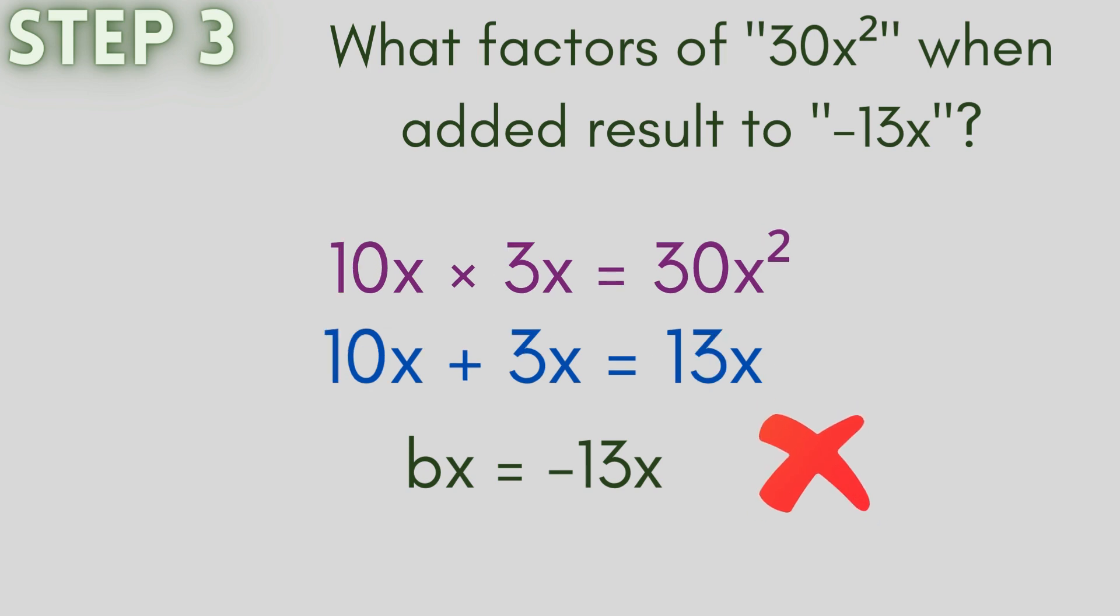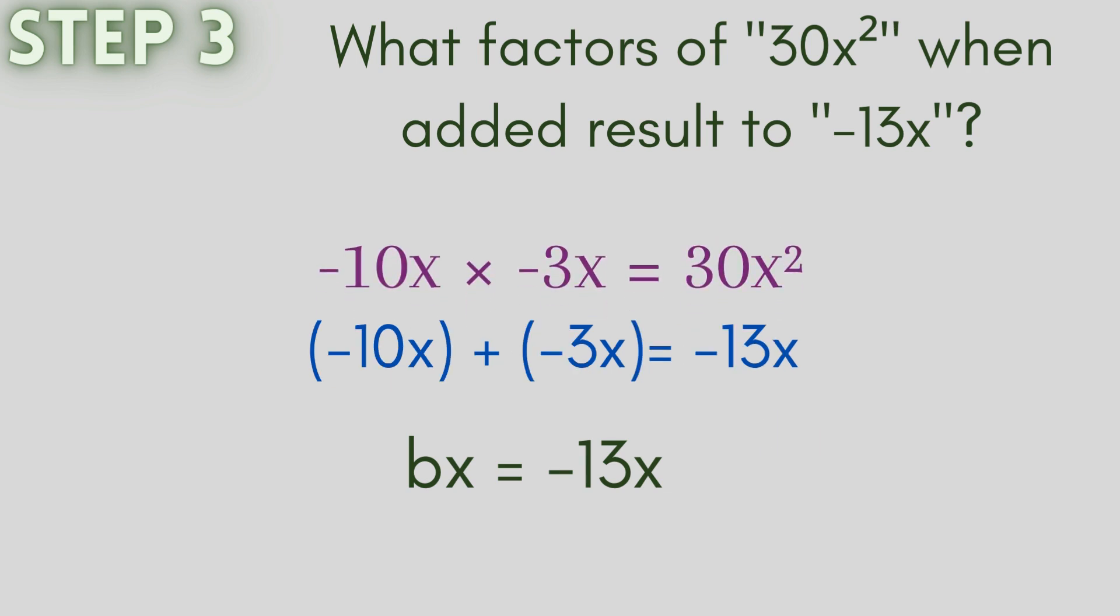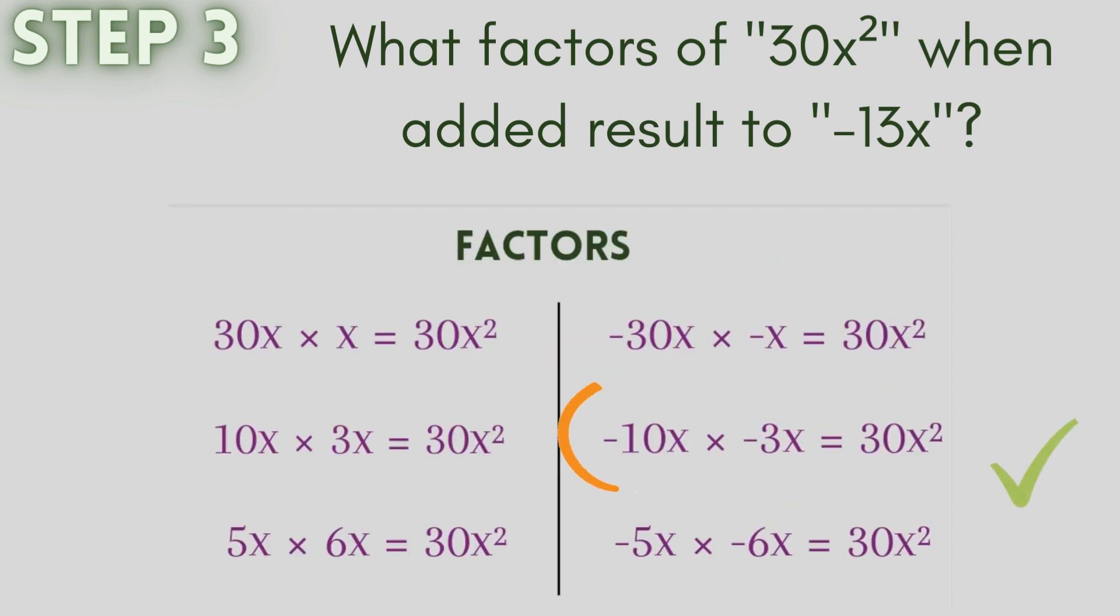So let us consider the next pair, 10x and 3x. When they are added, we get 13x which again is not equal to minus 13x. Now let us consider another pair of factors, minus 10x and minus 3x. On adding these two terms, we get minus 10x plus minus 3x is equal to minus 13x. We have found the factors of 30x² which when added results to minus 13x. The factors are minus 10x and minus 3x.